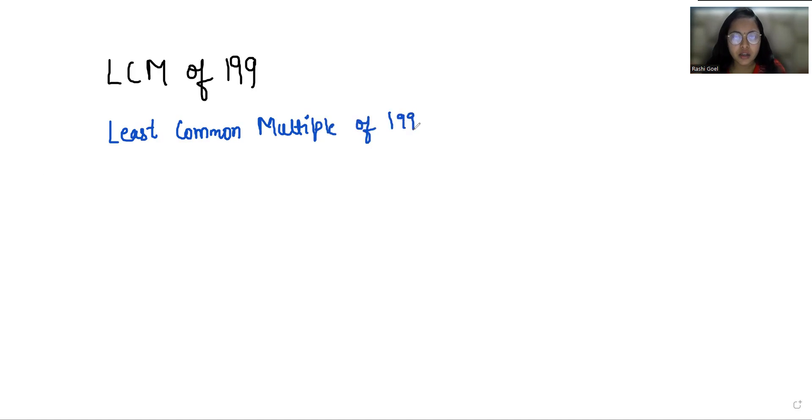To find the Least Common Multiple of 199, first we have to decompose all the numbers into prime numbers. So how can we decompose? By using the ladder method. 199 is a prime number, so we'll divide it by 1 only.